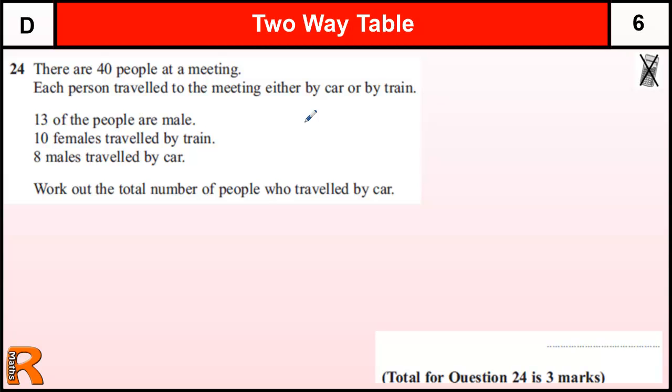So probably the best way to go about this is to construct your own table. So we have 40 people at a meeting. Each person travels to the meeting either by car or train. So we've got car or train, and then we should have a total column.